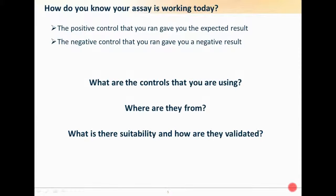One question that we always ask ourselves and ask other people in our labs — and have started to really push and ask pathology labs, whether it be molecular pathologists or histopathologists or cytogeneticists — is: how do you know that your assay is working today? The most common response we get is that the positive control in the kits gives the expected result, or the negative control gives the expected result.